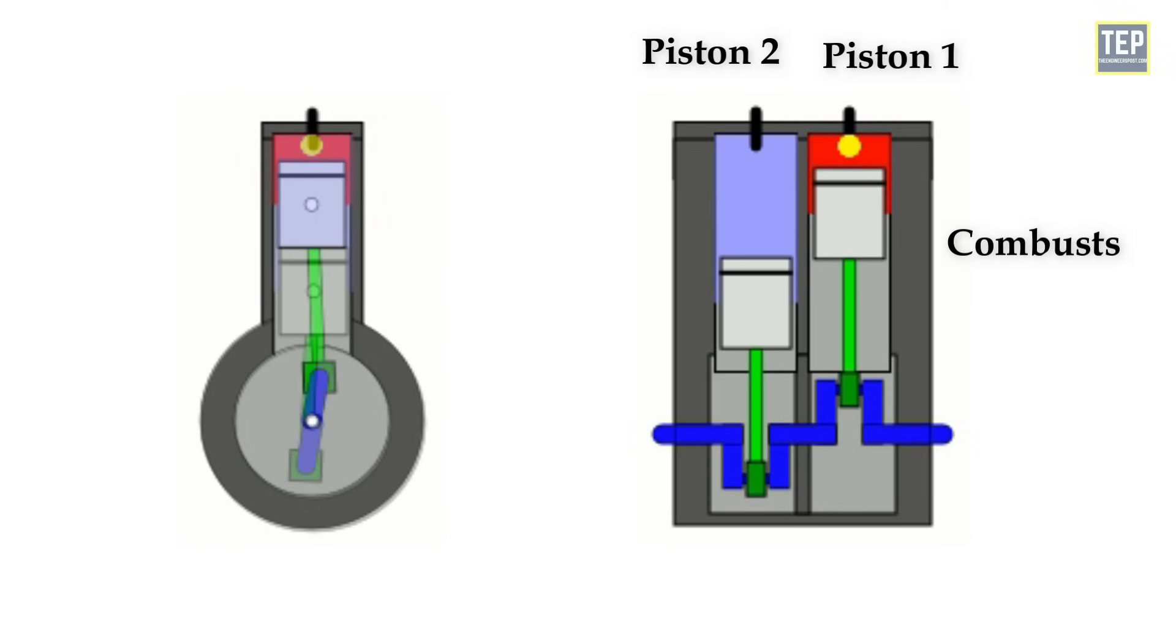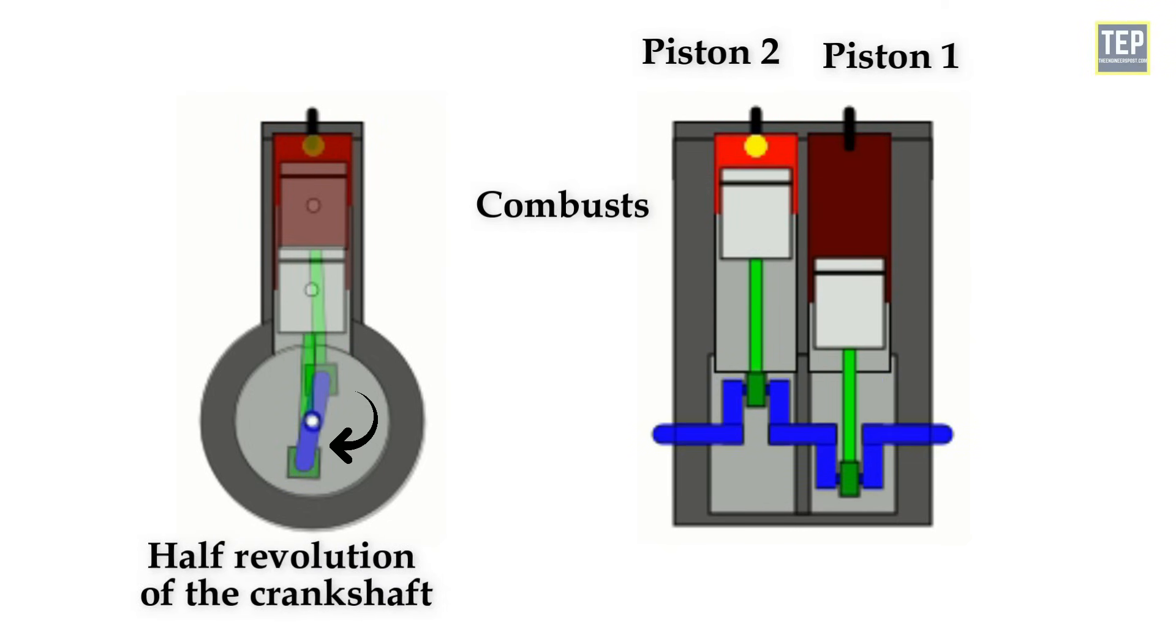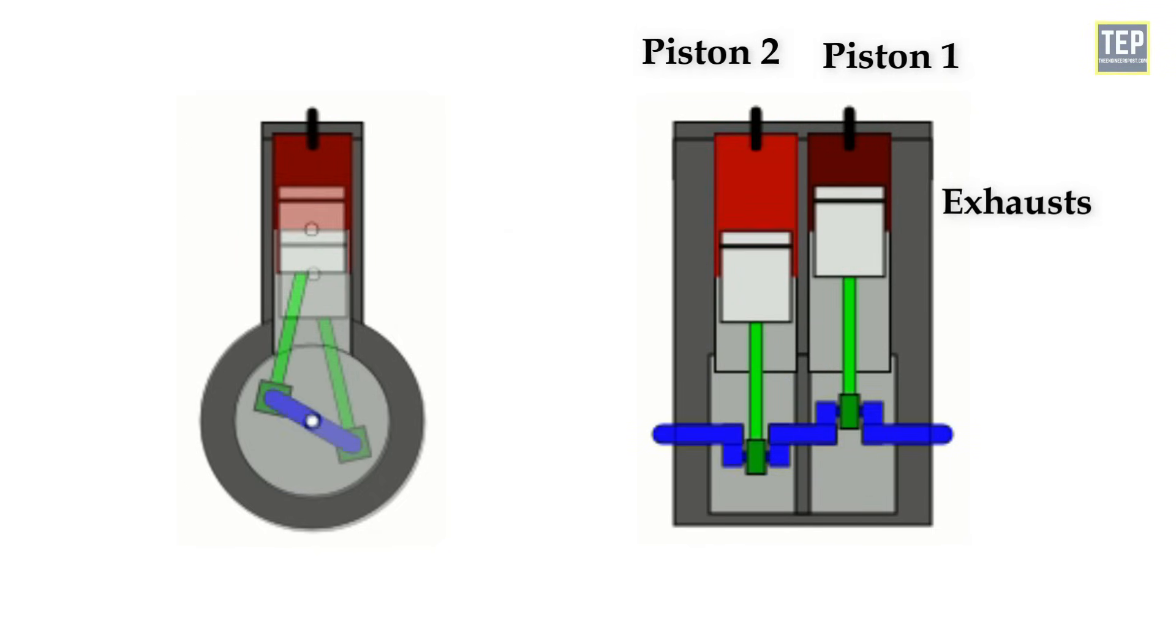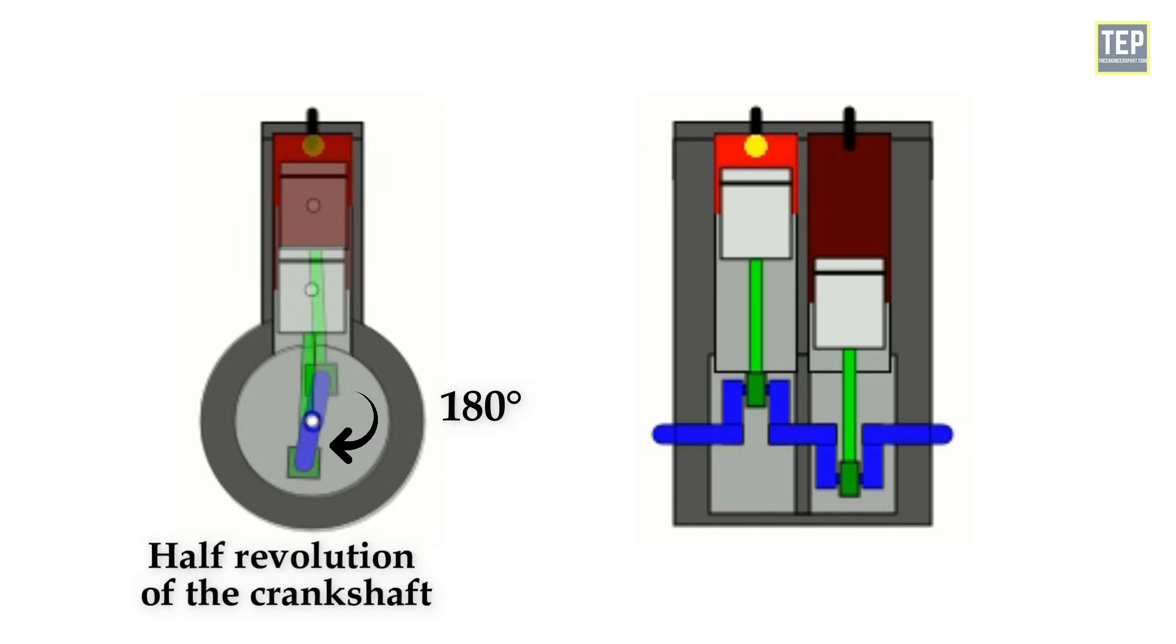Piston 1 combusts, as the second does compression, then piston 2 combusts, a half-revolution after piston 1 did, while piston 1 exhausts. That half-revolution is the so-called 180-degree difference named after this configuration.